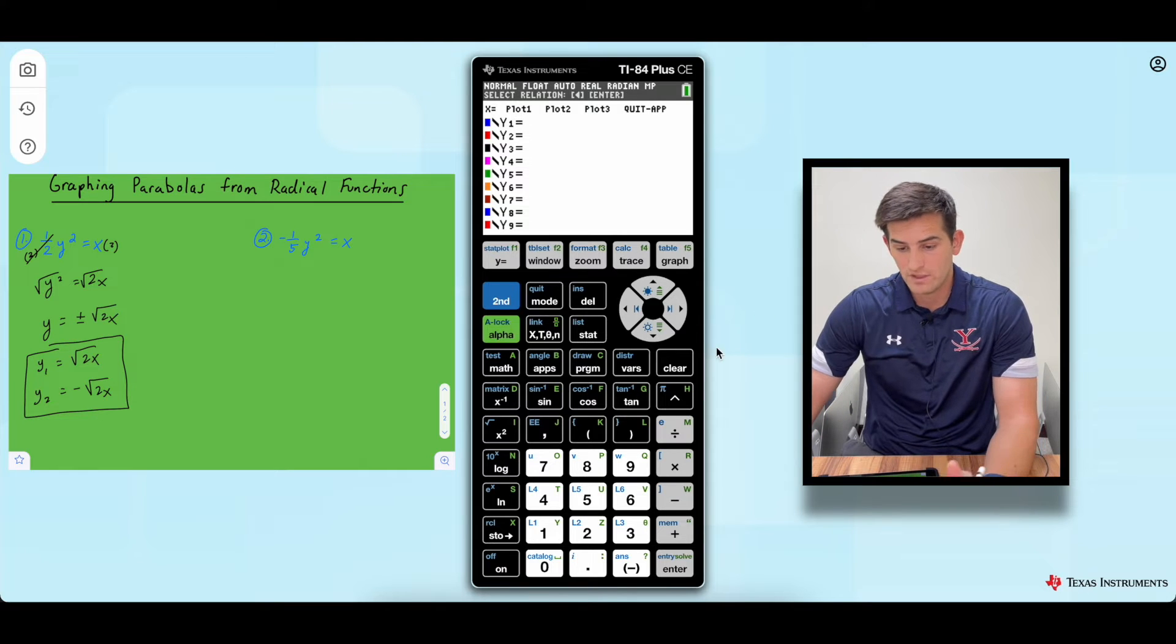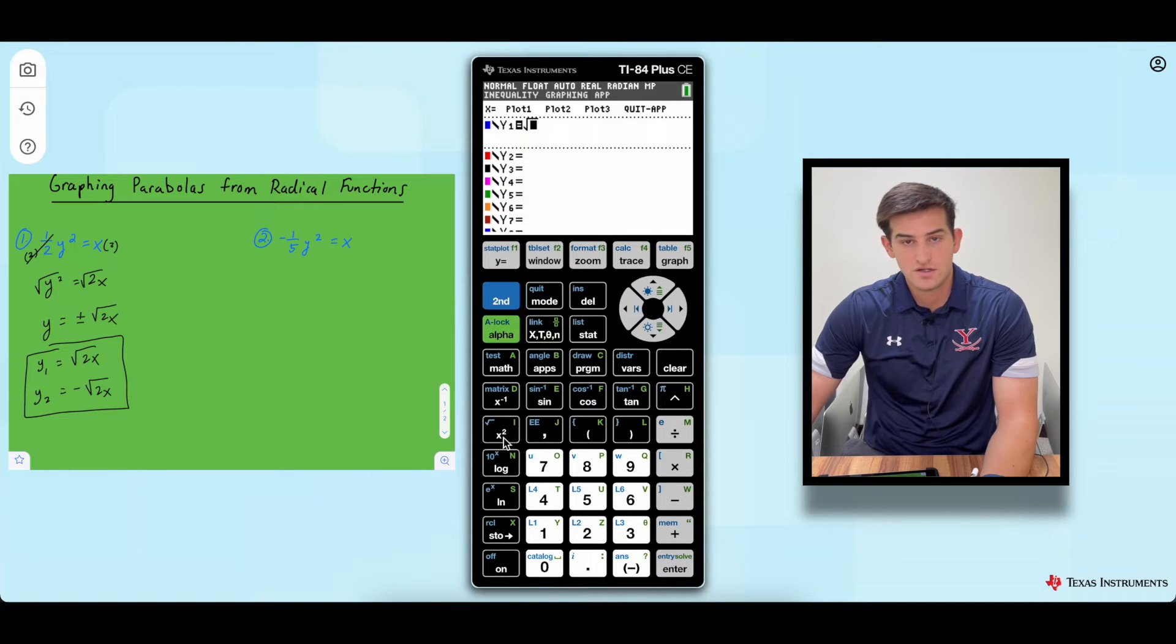So we're already on y1. We're going to click over so we can make sure we're ready to type. And we're going to do second x squared to get our square root, and we're just going to type in 2x.